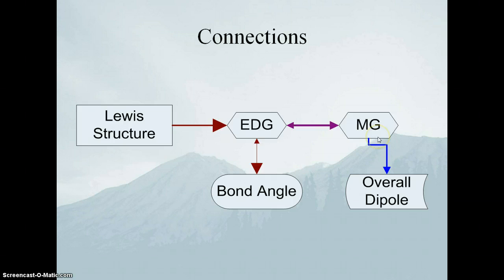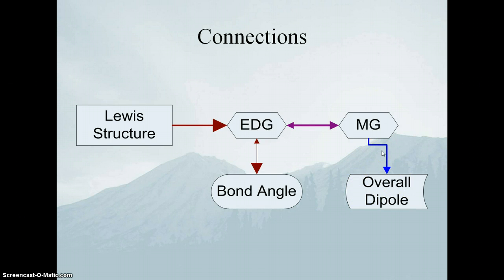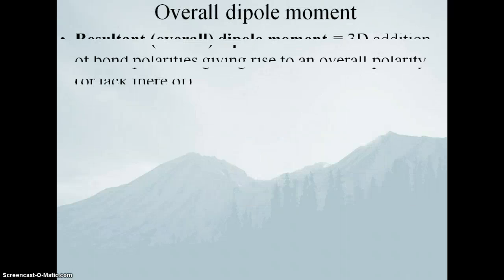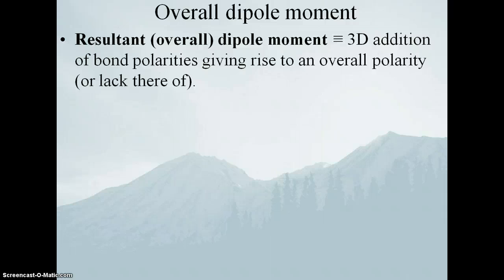Molecular geometry also has another consequence and that is the concept of overall dipole moment. We've talked about bond dipoles before, where we have two atoms bonded together with differing electronegativities. The electrons in that bond are going more towards the more electronegative element, giving bond dipoles. Now that we have a concept of overall molecular geometry, we can talk about the overall dipole moment, which is simply the vector addition of bond dipoles. That's all an overall dipole moment is — the 3D addition of bond polarities giving rise to an overall polarity or lack thereof.